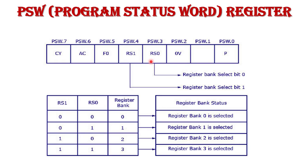The remaining bits — PSW5 and PSW1 — are general purpose flag register bits, also known as user-defined flag register bits. They can be used by the programmer for any purpose.